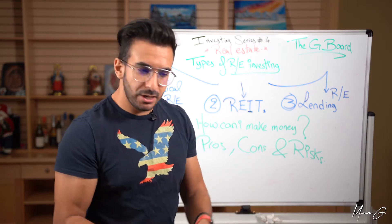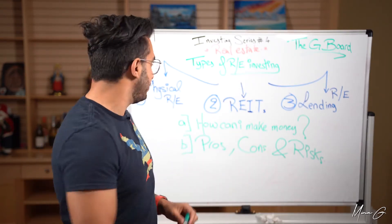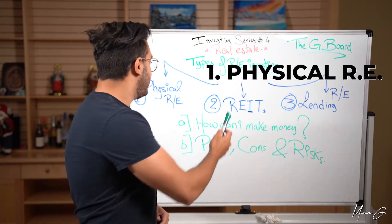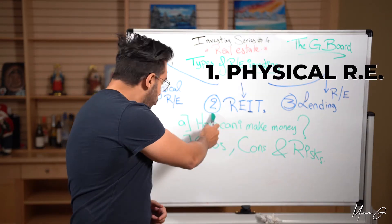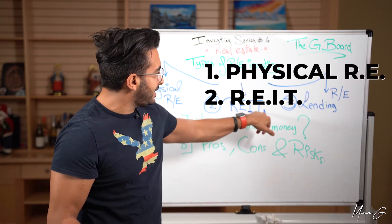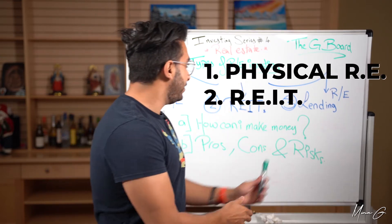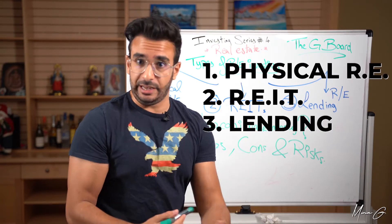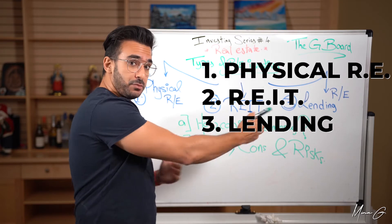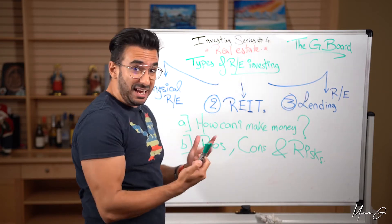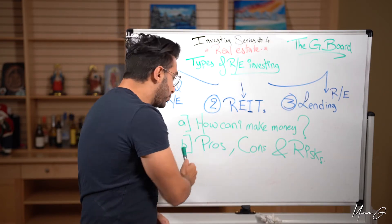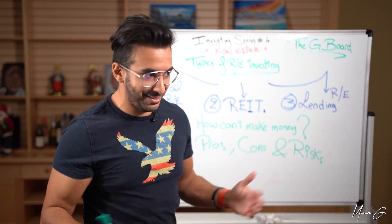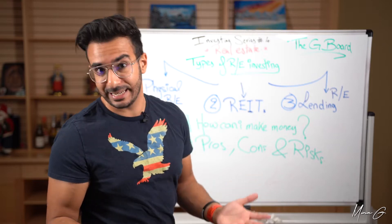So what are the types of real estate investing or how can I invest in real estate in general? Number one, which is quite obvious, is actually physical real estate, which is exactly as it sounds. Number two would be something called REITs, R-E-I-T. And we'll explain what that is. The other thing would be lending, lending backed by real estate. In each of these points, we're going to talk about how can I make money with each one, and number two, pros, cons and risks associated. Because like we said, anything has risks. Nothing is all millions of dollars without any downside.